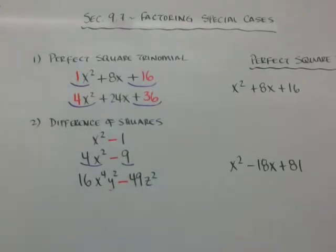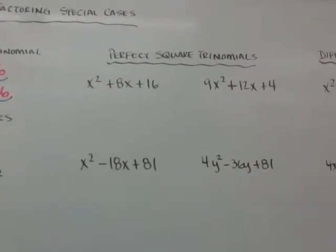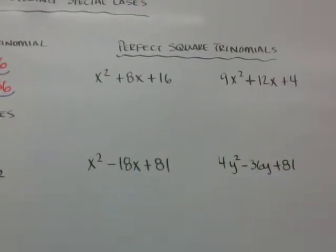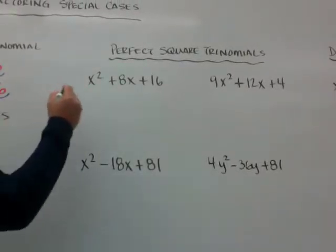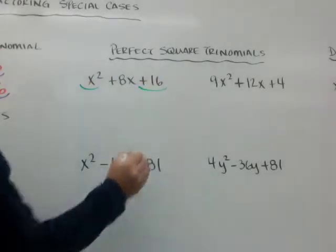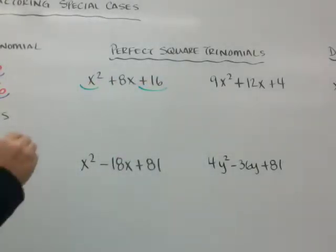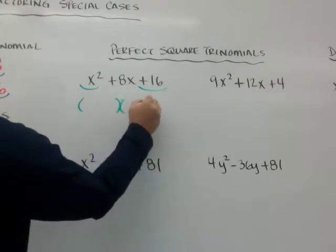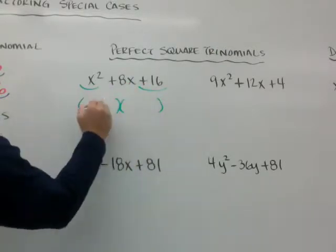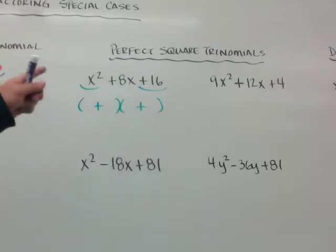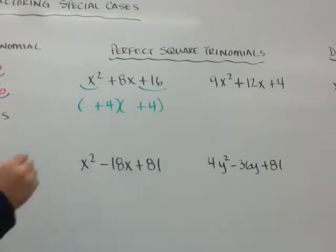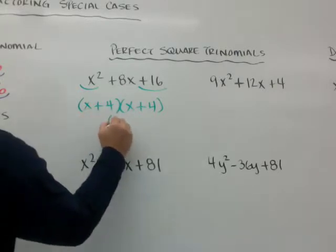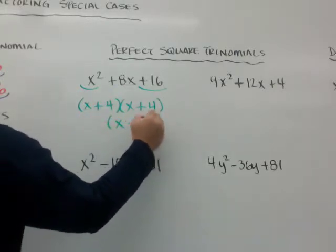Here's how we factor them. The first type is the perfect square trinomial. What you want to look for is if the first and last terms are perfect squares. Because this is a plus, it's going to be plus-plus. Factors of 16 that add up to 8 — because it's a perfect square, it's going to be 4 and 4, and then x and x. So it's just x plus 4, and you can rewrite it as (x + 4) squared.